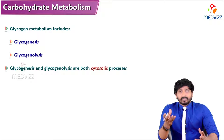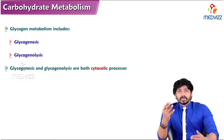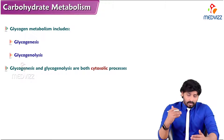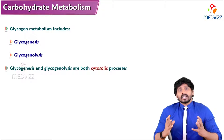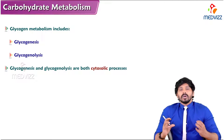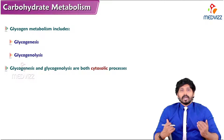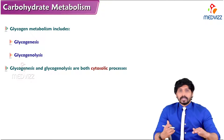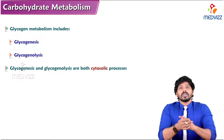Glycogen is the storage form of carbohydrate in animals, including humans. Its significance is that it mainly acts as a reserved form of energy storage. When your blood glucose levels are exhausted, glycogen acts like a backup. We need to understand how glycogen is synthesized, where it is stored, and how it comes into action during starvation.